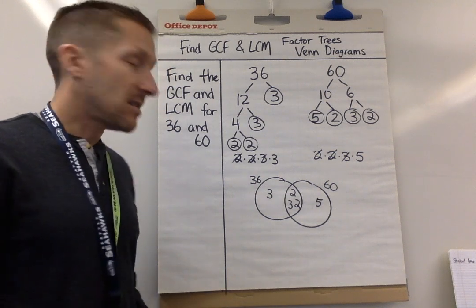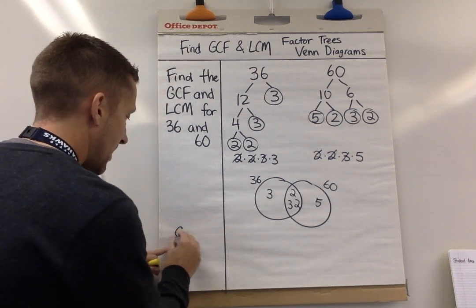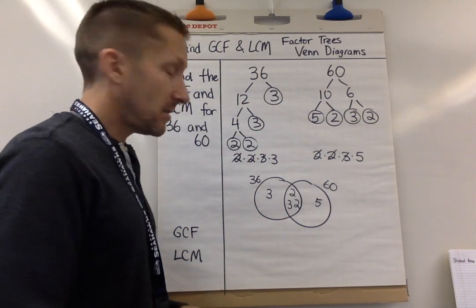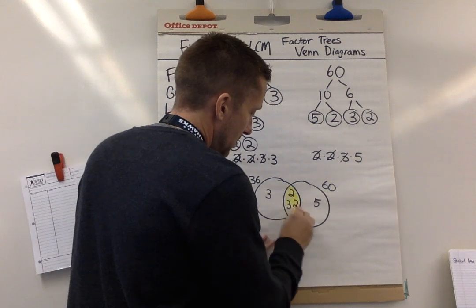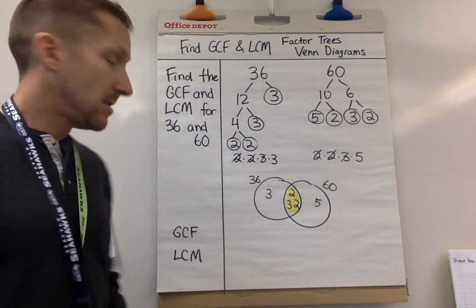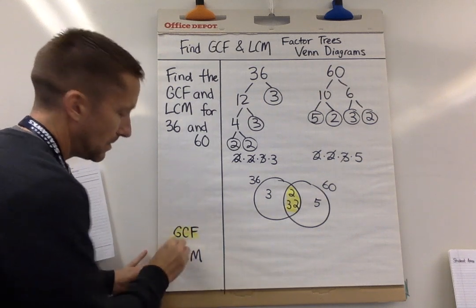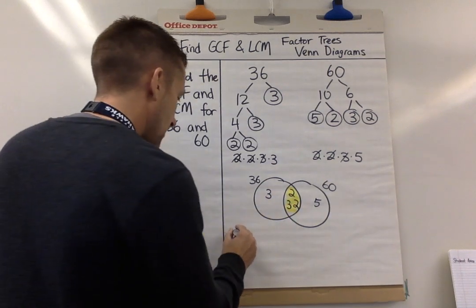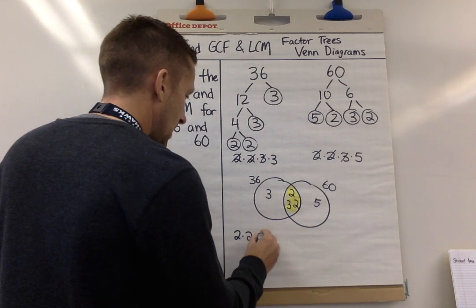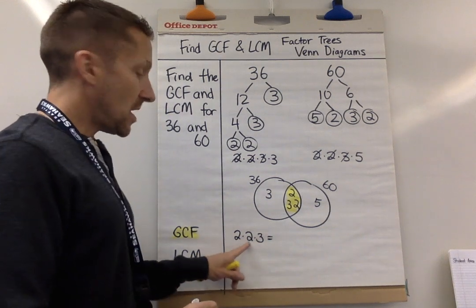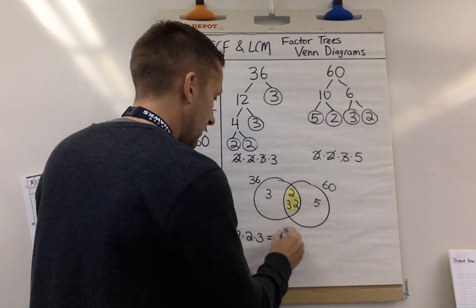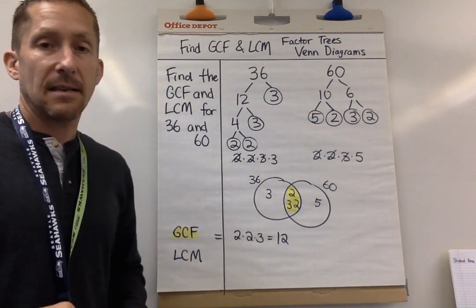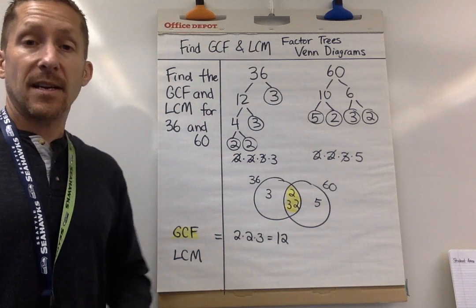Here's how you use the Venn diagram to find greatest common factor and least common multiple. For greatest common factor, I look at the shared factors in the middle and multiply them all together: 2 × 2 × 3 = 12. So 12 is the greatest common factor for 36 and 60.